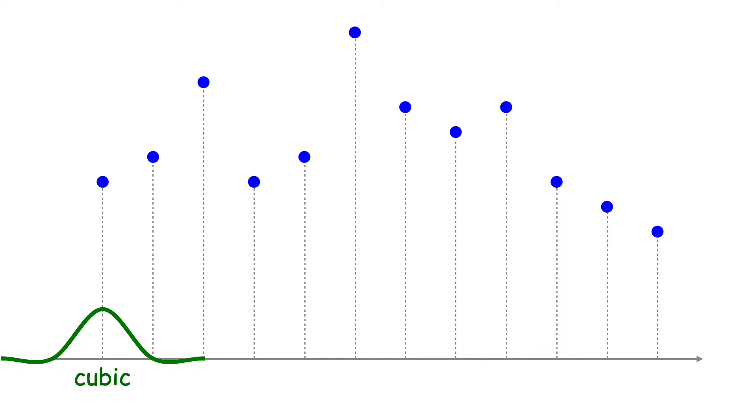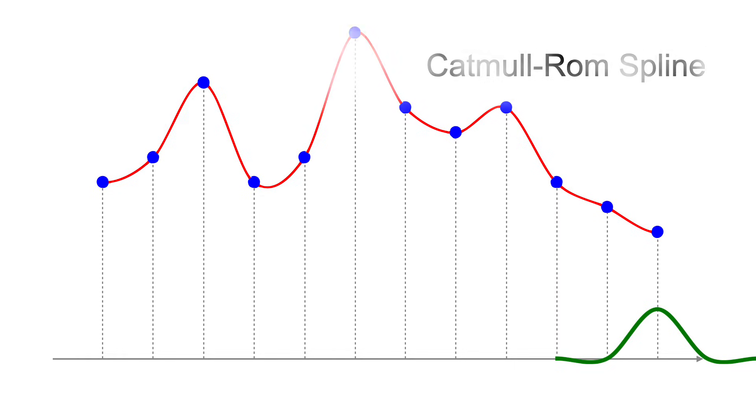If you saw our video on convolution, you'll remember that you can interpolate a continuous function by sliding a cubic filter of weights. What we didn't say is what function you get from doing this. The answer, amazingly, is the Catmull-Rom spline.